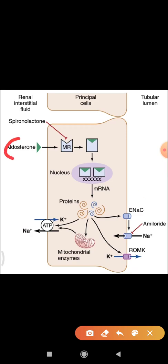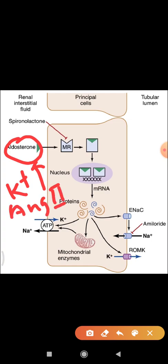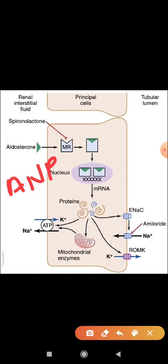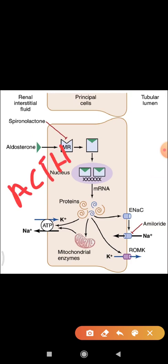Now, how is aldosterone regulated? Aldosterone increases when there is a rise in potassium level, a rise in angiotensin II, or a decrease in sodium in the blood. ANP — atrial natriuretic peptide — is secreted from the cardiac atria when they are stressed, indicating increased blood volume. If ANP is increased, then aldosterone decreases. ACTH is also required for aldosterone secretion, but it does not control the rate — it has only a permissive role, meaning even a small amount of ACTH is sufficient for aldosterone to be secreted.